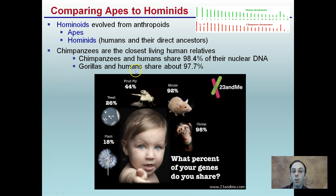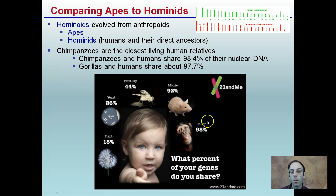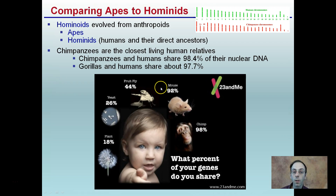Chimpanzees are the closest living human relatives because they share about 98.4% of their nuclear DNA. Gorillas and humans share about 97.7%. To put that in perspective: we share about 98% of our genes with chimpanzees and about 92% with the mouse.